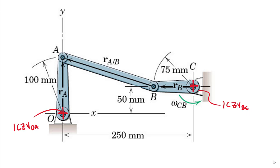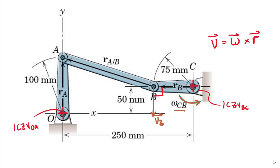Now let's look at the absolute linear velocity at point B. If we have an angular velocity omega of CB going positive from the right-hand rule, then our linear velocity at point B must be vertical and going straight downward. This is because the velocity is always perpendicular to the R vector from our equation V = omega cross R. Our omega vector is coming out of the screen, and we cross that into R_B to get V_B.